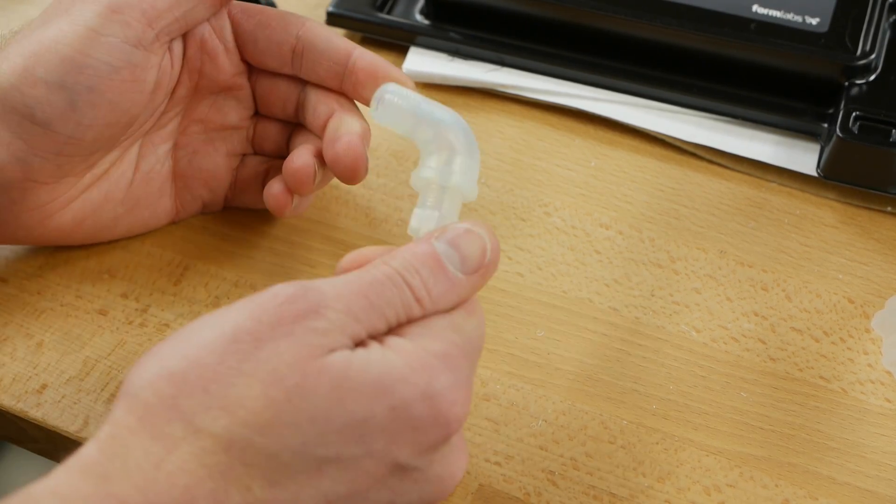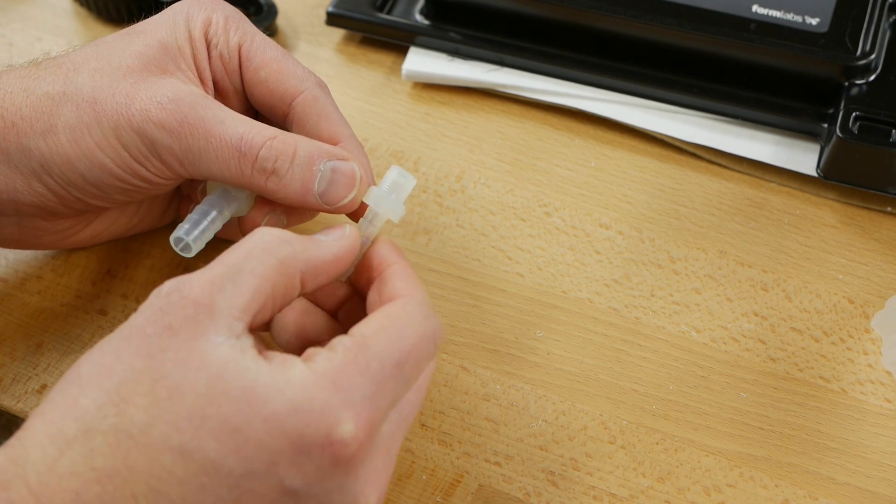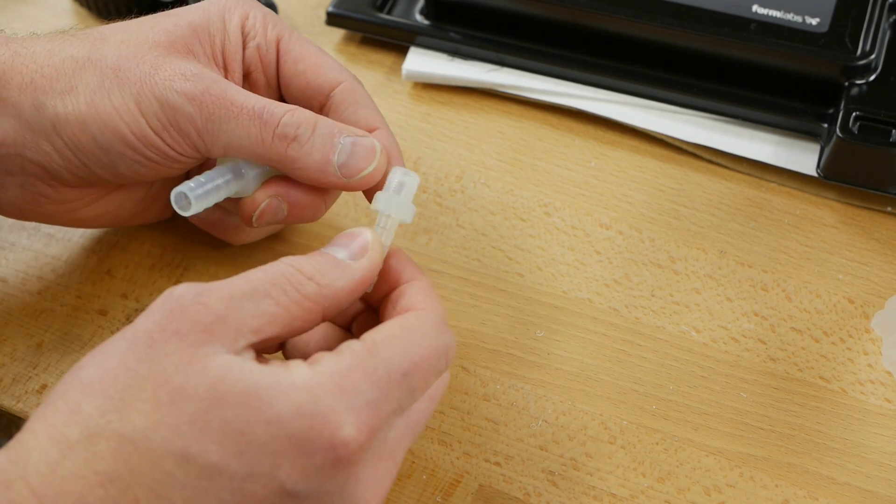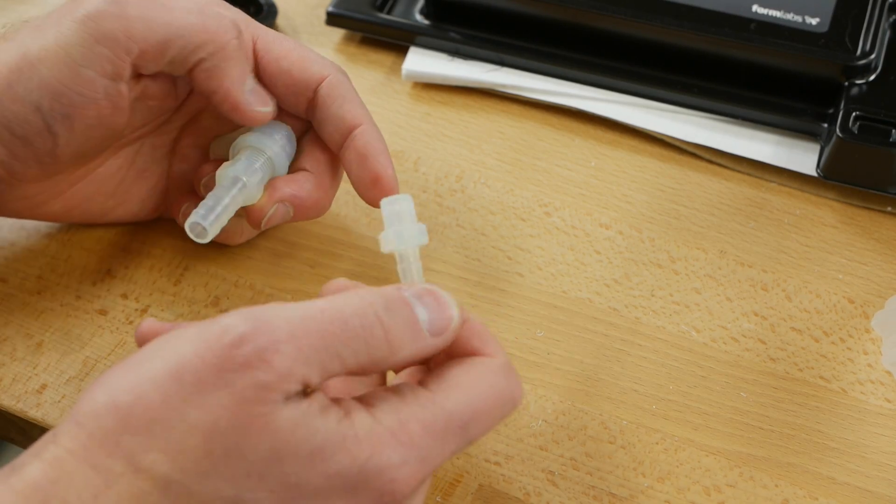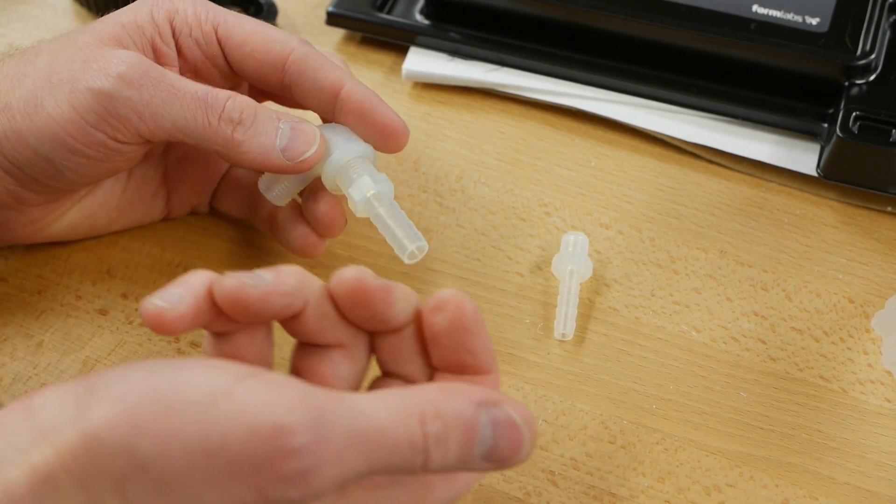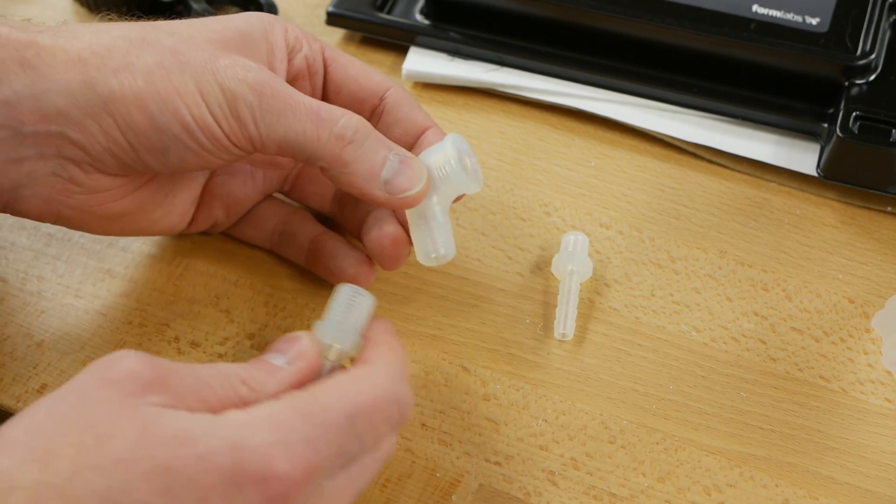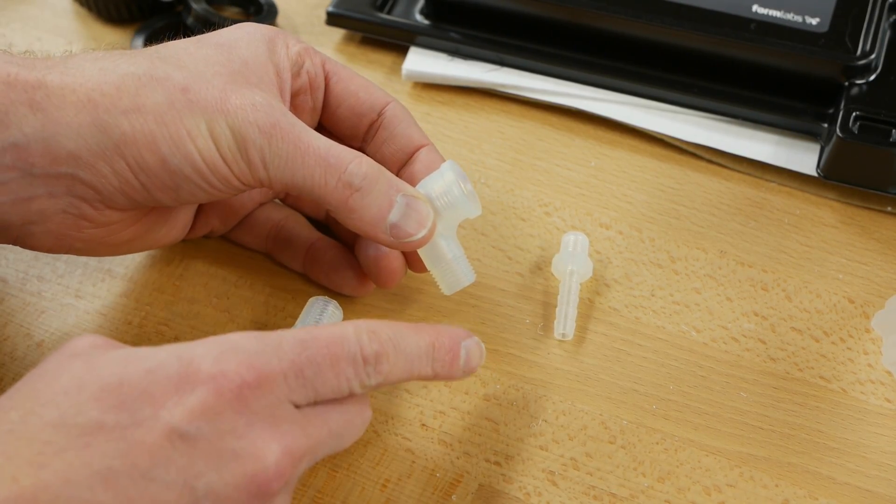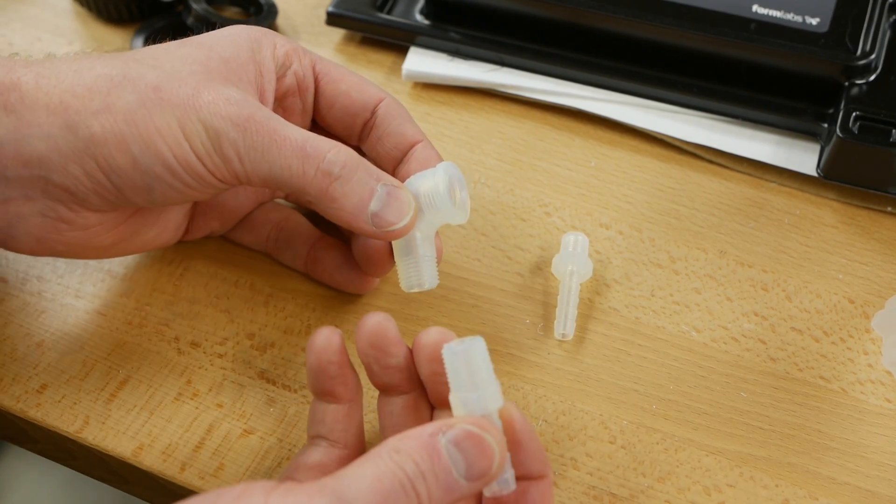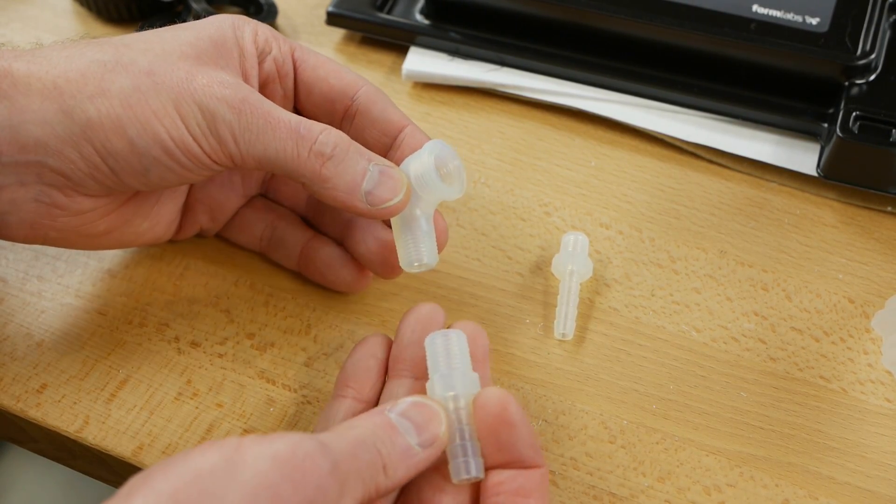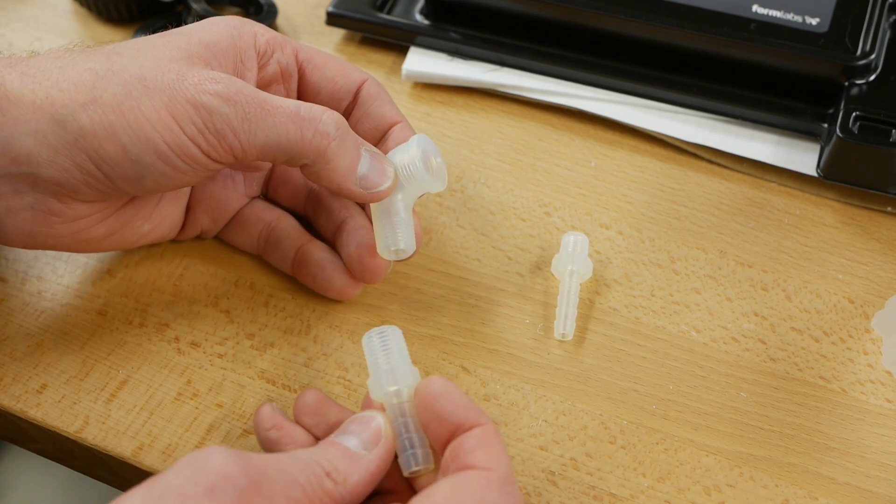Now it does have its limits of course you can't print an eighth inch pipe thread is really pushing it. If you put enough pipe sealant on here and your pressures aren't very high it will hold together but that's pretty much getting up near the limit. Nonetheless it does give you the possibility where if you need some kind of a weird fitting that has quarter inch pipe on this side three eighth pipe on this side and a hose barb over here you can just download all those parts from McMaster and merge them together in Fusion 360 and then print the whole mess out.